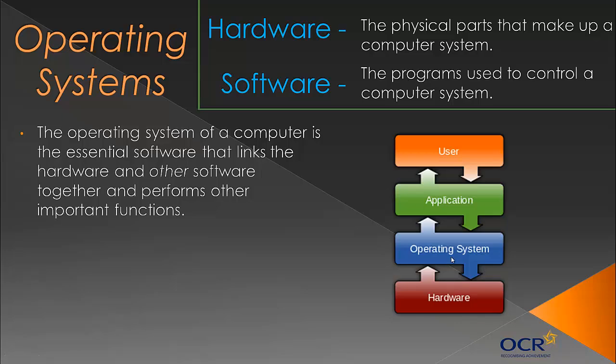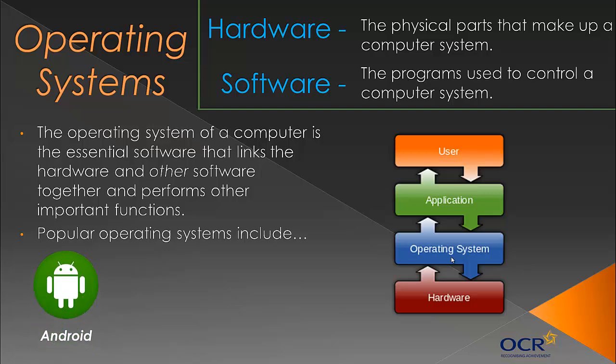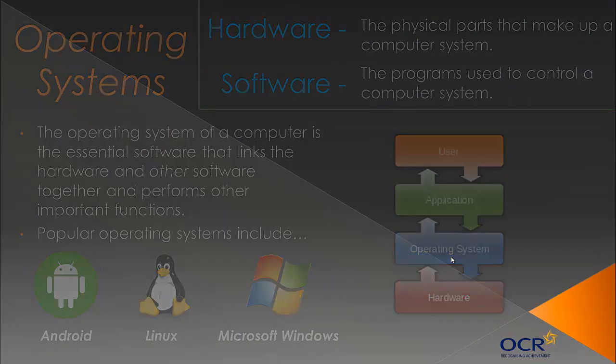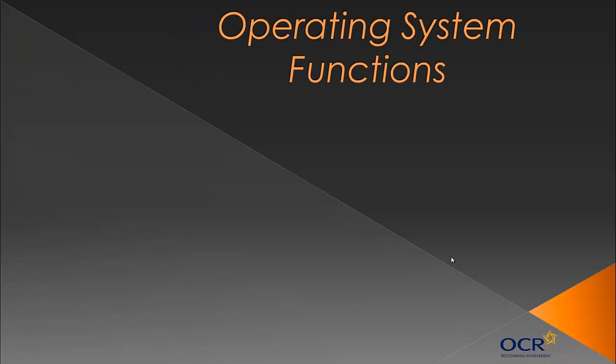It's essential software that links everything together with other software. Looking at some functions in the next slide should clear that up. Three examples of operating systems are Android, Linux, and Windows, as well as iOS on Apple devices. Lots of operating systems are used by lots of people because they're obviously essential.